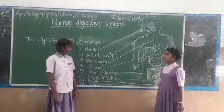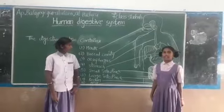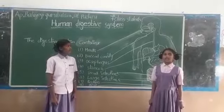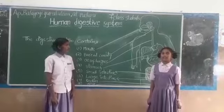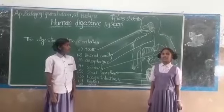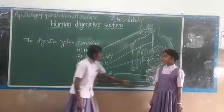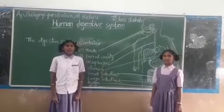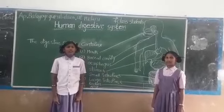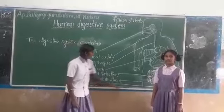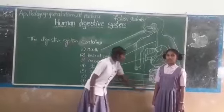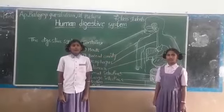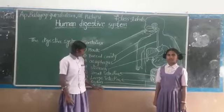This is the Small Intestine. Small intestine is about 6 meters long. Digestion of food is completed with the help of its juices. This is the Large Intestine. Large intestine absorbs water and minerals from the undigested food. This is the Rectum. Rectum is a storage point for the undigested food.